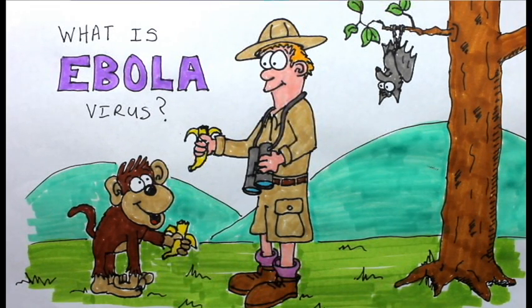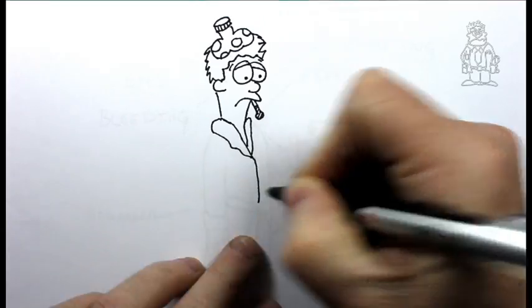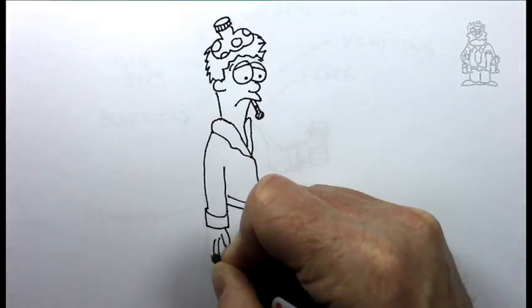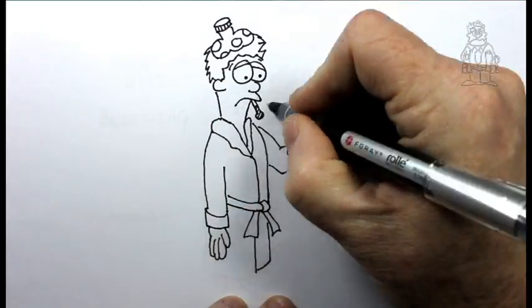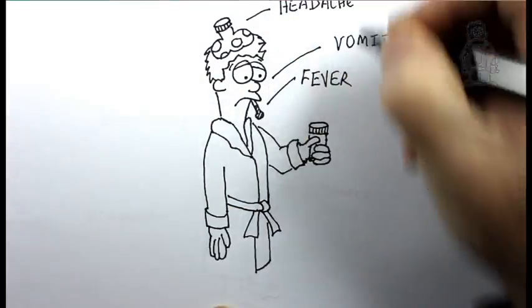You just returned from a family vacation to Central Africa and have noticed some curious symptoms. Fever, headache, diarrhea, vomiting, stomach pain, red eyes, and bleeding profusely from every body orifice.